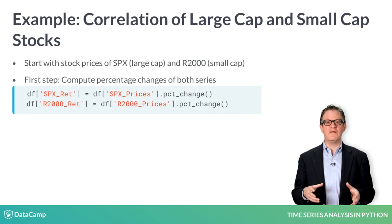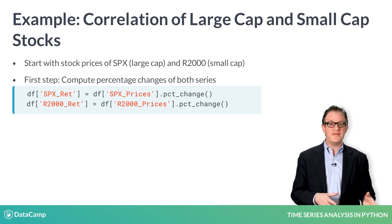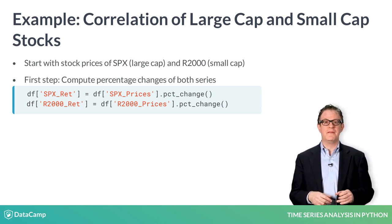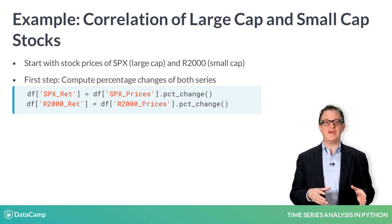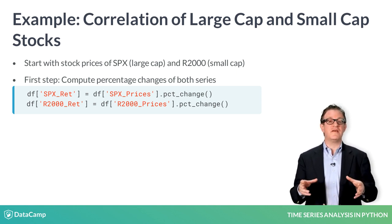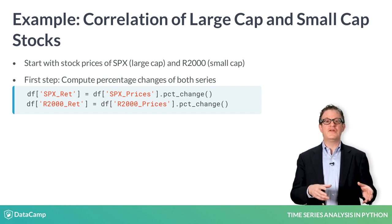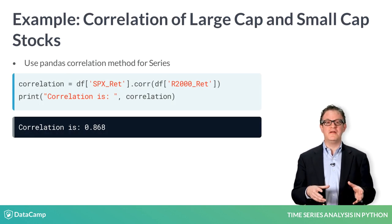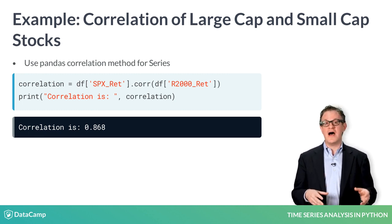Now you'll see how to compute the correlation of two financial time series — the S&P 500 index of large cap stocks and the Russell 2000 index of small cap stocks — using the PANDAS correlation method. First, compute the percent changes using the percent change method. This gives the returns of these series instead of prices. You can also visualize the correlation with a scatter plot. Then use the PANDAS correlation method for series. The correlation between large cap and small cap stocks is very high: 0.868. Time to put this into practice.